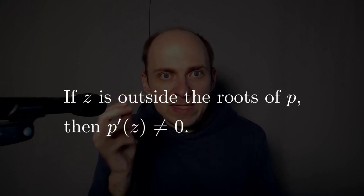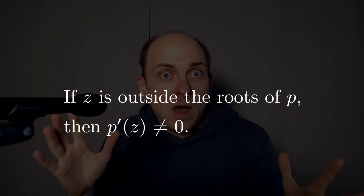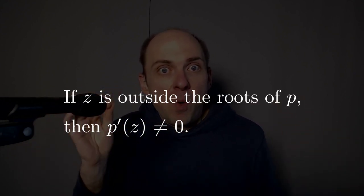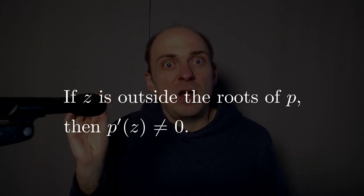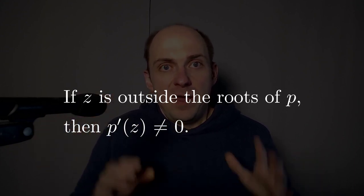I want to show that if I've got a point z which is outside of the roots of my original polynomial p, then that point is not a root of the derivative.